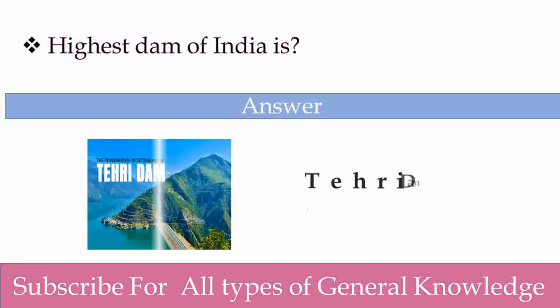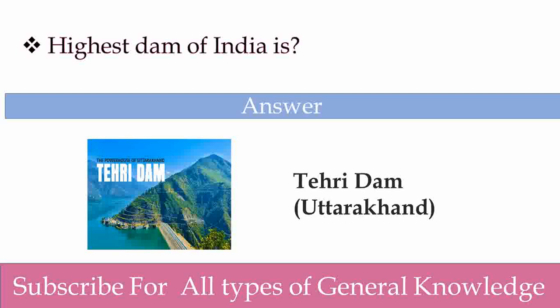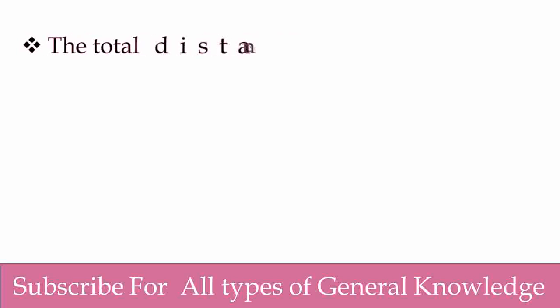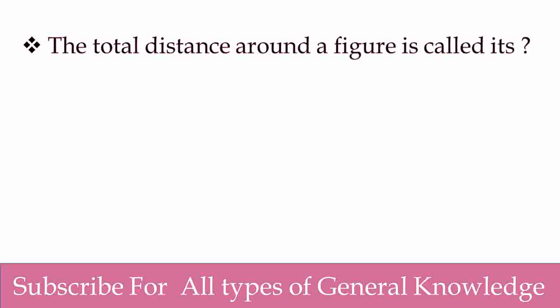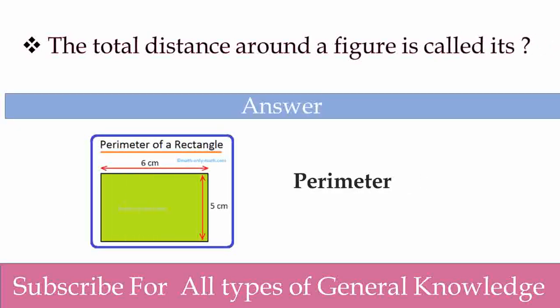Highest dam of India is? Tehri Dam, Uttarakhand. Yes, it is situated in Uttarakhand. Very good. The total distance around a figure is called its? Abhibsha will tell you. Perimeter. Yes, the right answer is perimeter. The total distance around a figure is measured by the perimeter.